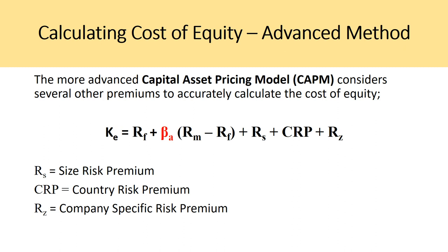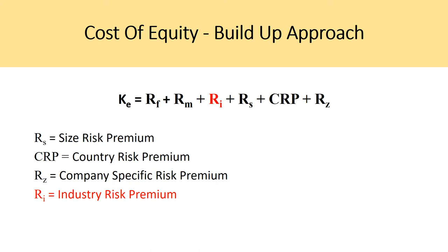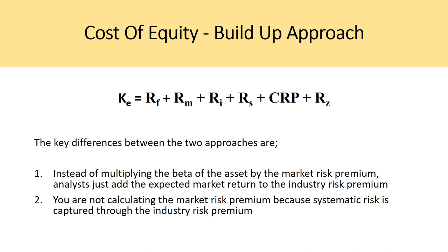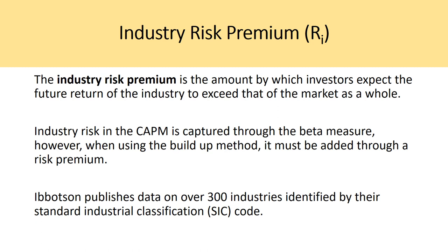Another method is the buildup approach. The key difference between the buildup approach and the CAPM is the industry risk premium: instead of capturing systematic risk through the beta variable, the buildup model adds an industry risk premium directly. So rather than multiplying beta by the market risk premium, you add the industry risk premium. You also do not separately calculate the market risk premium (expected return minus risk-free rate), because systematic risk is already captured through the industry risk premium.